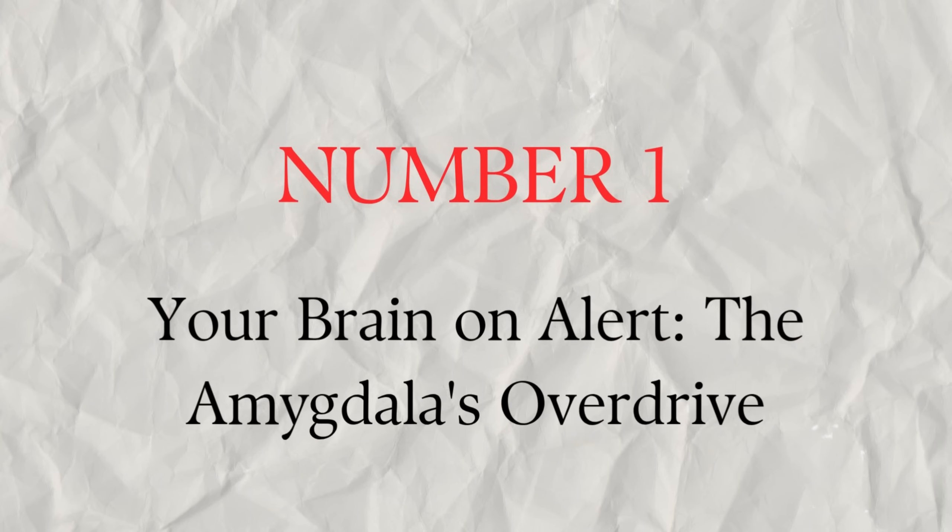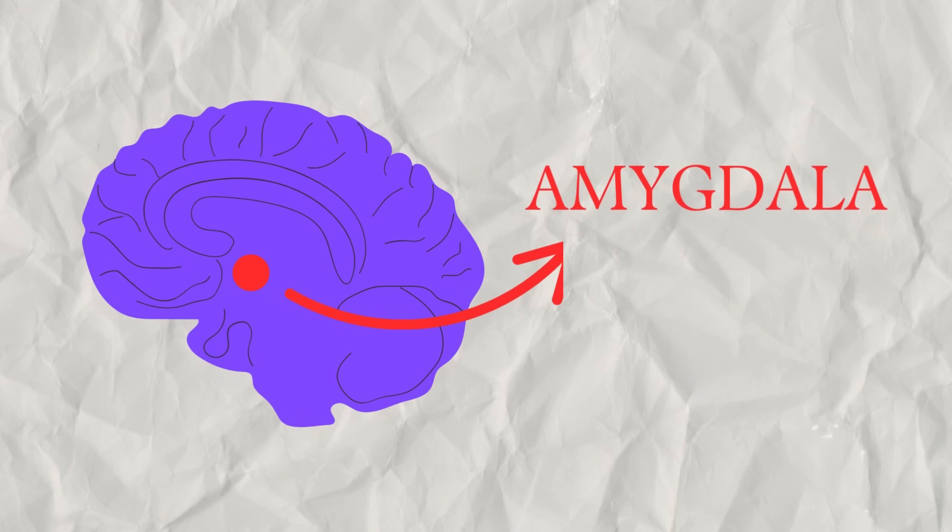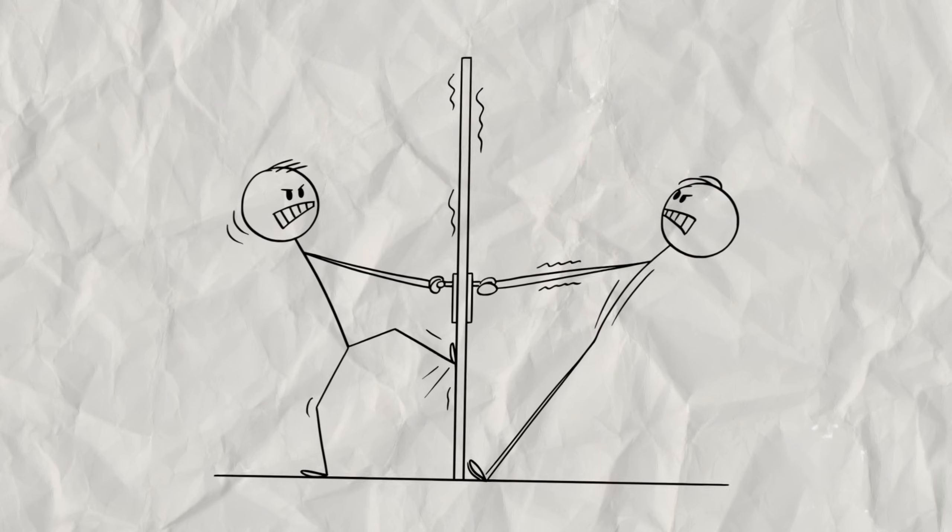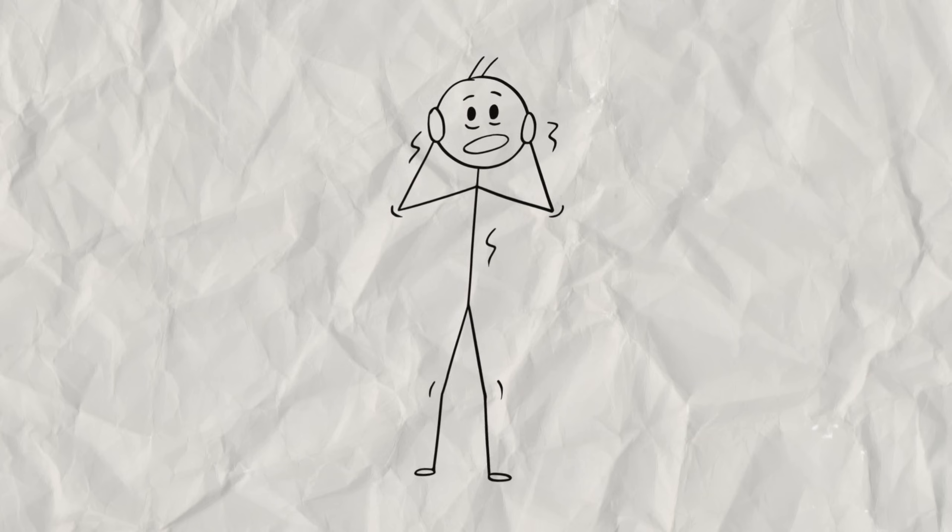Number one, your brain on alert, the amygdala's overdrive. Consider your brain's alarm system, a tiny, almond-shaped region called the amygdala. Its job is to detect threats and trigger your fight, flight, or freeze response.